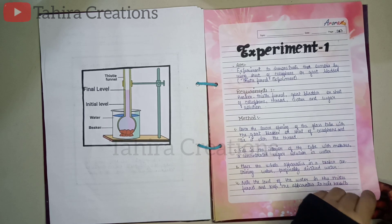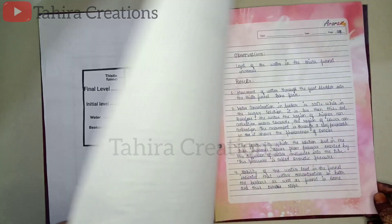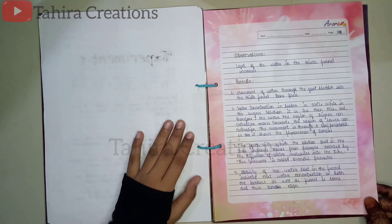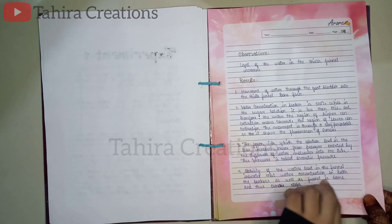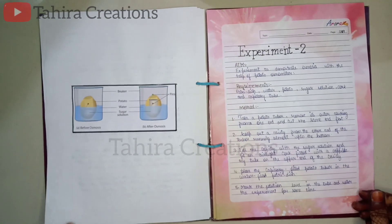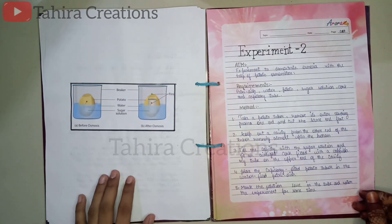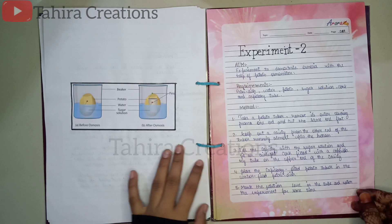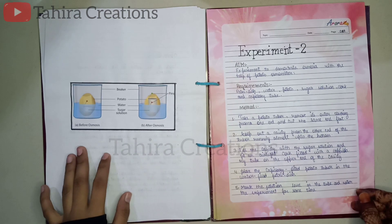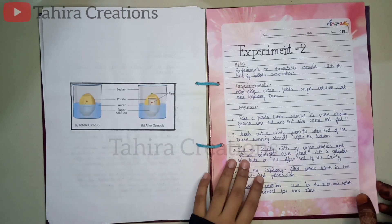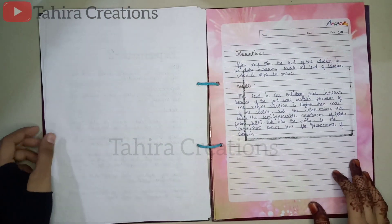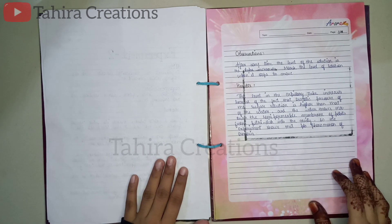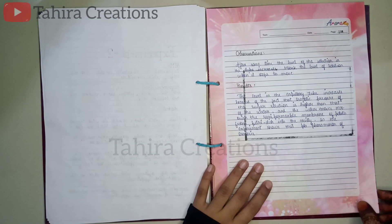For Experiment 1, a picture is pasted and all the relevant things are written — you can see them easily. If you want to read the text, increase the quality of the video; that way it'll be easier to read all the text written in the project.